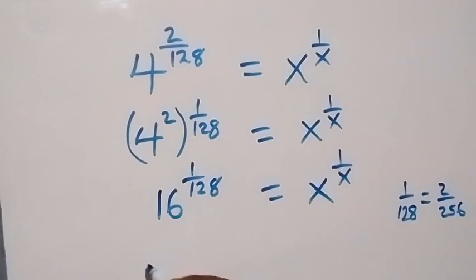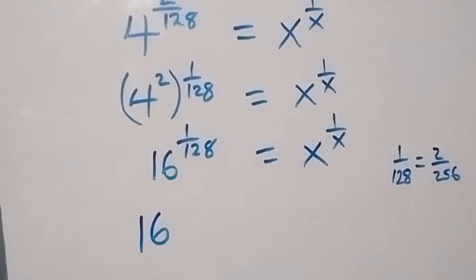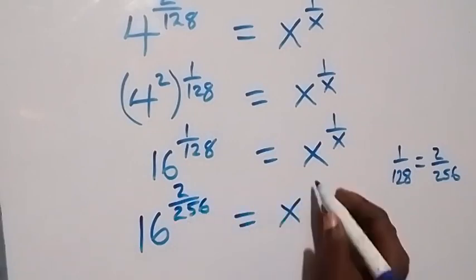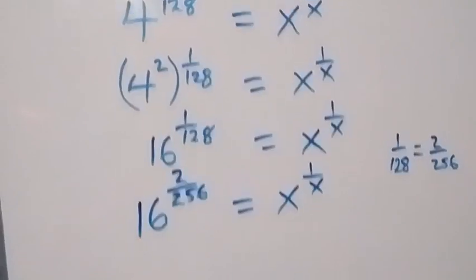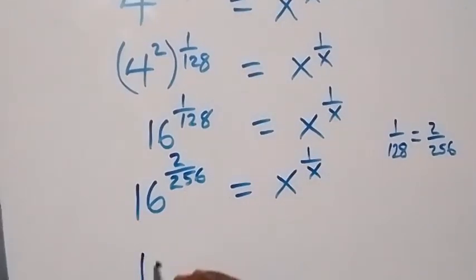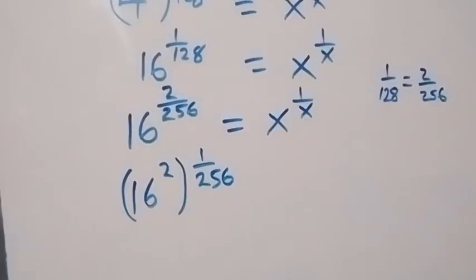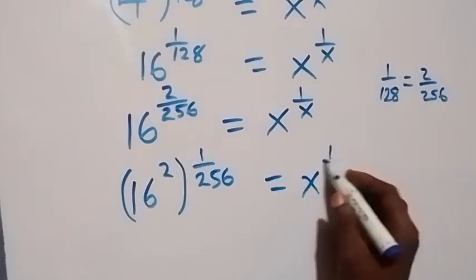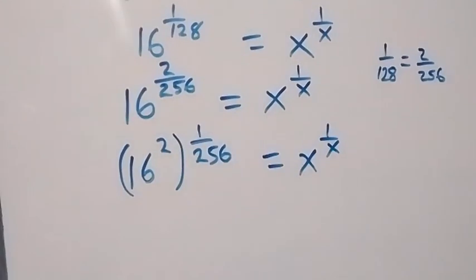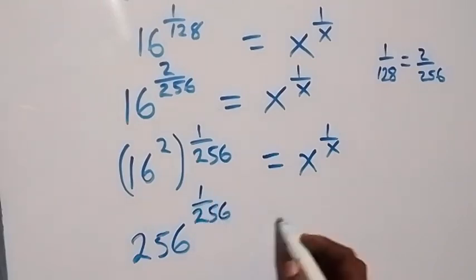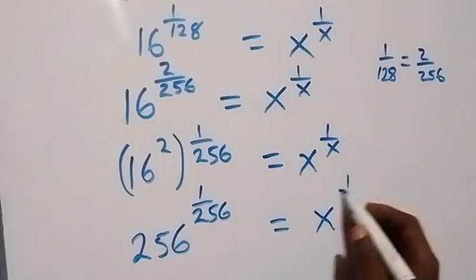We can write 1 over 128 as the equivalent fraction 2 over 256. This will be written as 16 raised to power 2 over 256, equals to x raised to power 1 over x. This can be separated as 16 raised to power 2, then raised to power 1 over 256. Now, 16 squared is 16 times 16, which is 256. So we have 256 raised to power 1 over 256, equals to x raised to power 1 over x.